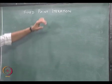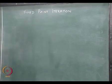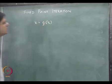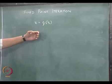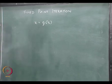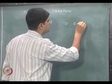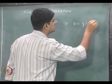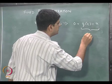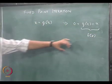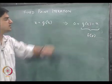The fixed point iteration method is used to solve any general problem of the form x equals g of x. This is nothing but a recasting of the original problem. If we write this as 0 equals g of x minus x, then g of x minus x becomes our f of x, and f of x equal to 0 is the form we have looked at so far.